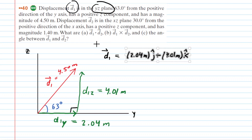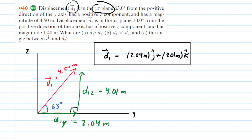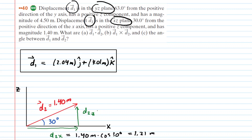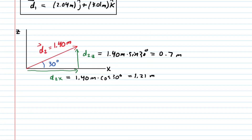We need to do the same thing to find the unit vector notation of vector D2, which is in the XZ plane. The X component of vector D2 runs along the horizontal axis — that would be D2X — and the Z component runs up the positive Z axis as D2Z. Using the same procedure, D2X equals 1.4 meters times the cosine of 30 degrees, giving about 1.21 meters. The Z component is 1.4 meters times the sine of 30 degrees, which equals 0.7 meters.